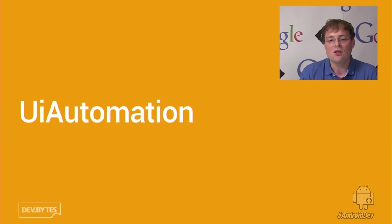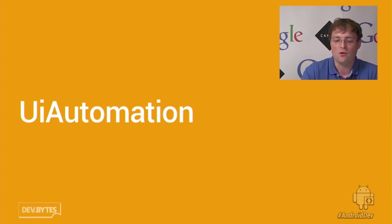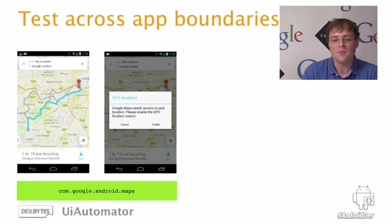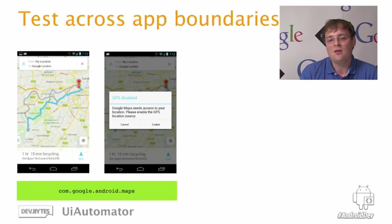UI Automation is a new API that introduces full screen introspection support into the Android instrumentation framework. Why is this important? Because it enables testing across application boundaries within your instrumentation tests. But let's have a look at a quick example.